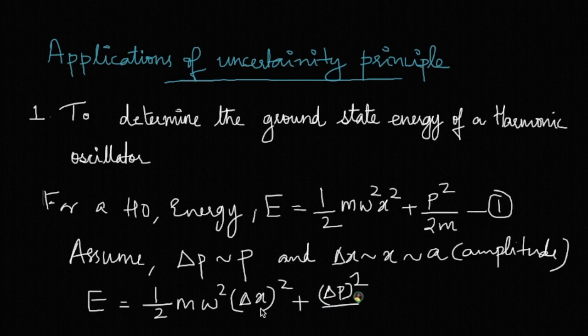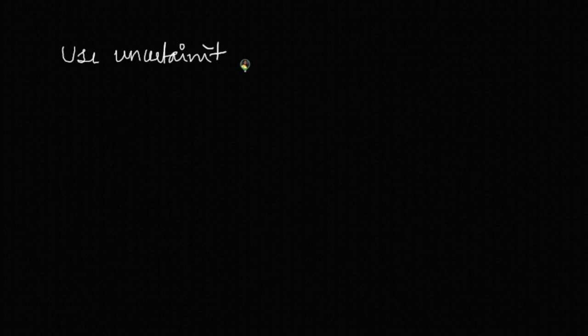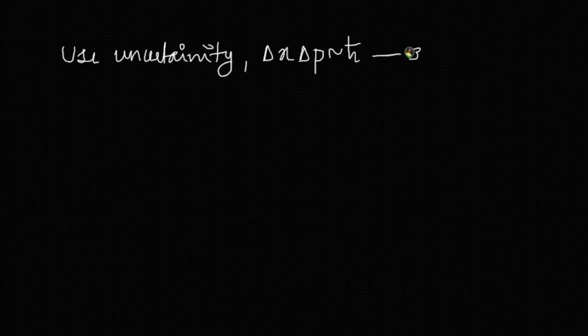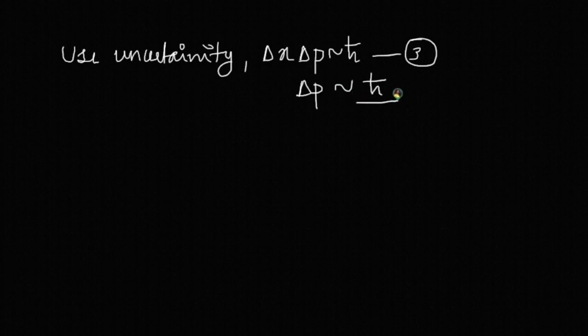Now use the uncertainty principle, whose mathematical form is δx·δp ≈ ℏ. Therefore, we can write δp = ℏ/δx. Since δx has already been taken as the amplitude a, we get δp = ℏ/a.